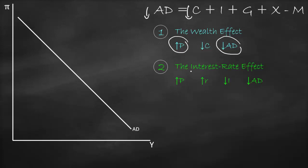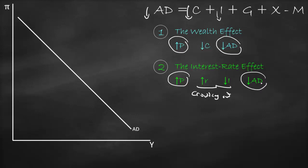The second effect is called the interest rate effect. If prices increase, our nominal and real interest rate will be higher. If interest rates increase, investment will decrease because we have a negative relationship between investment and interest rate — this is called the crowding out effect. If interest rates are higher, it becomes very hard for businesses to repay the debt service, so they have less motive to invest.